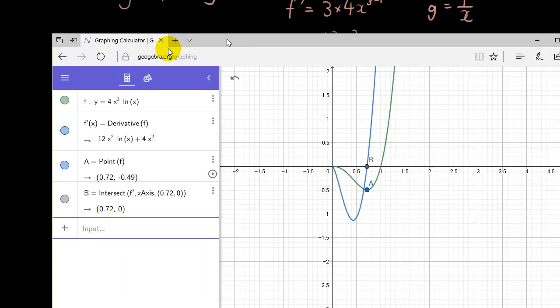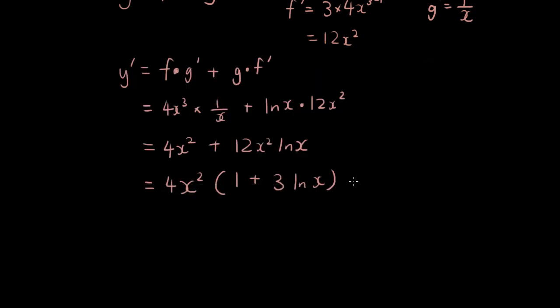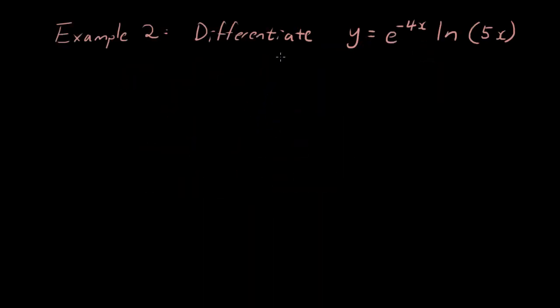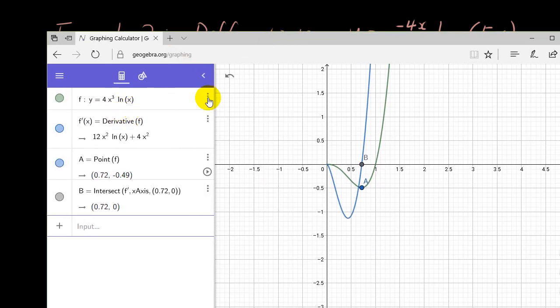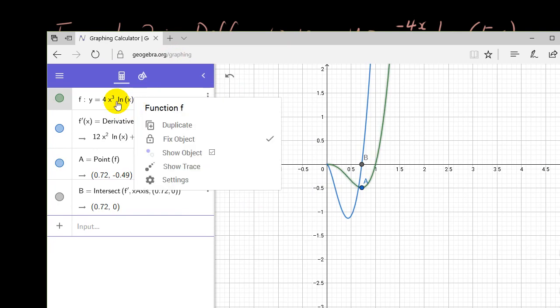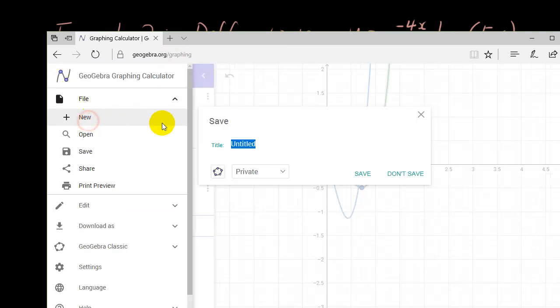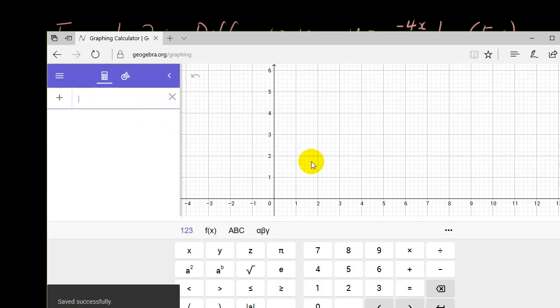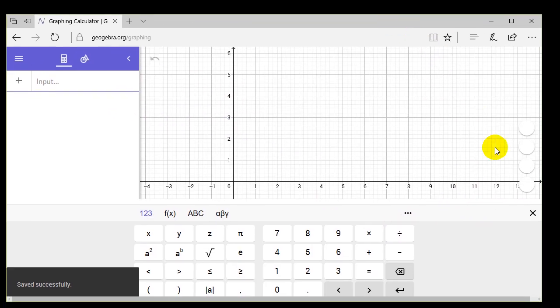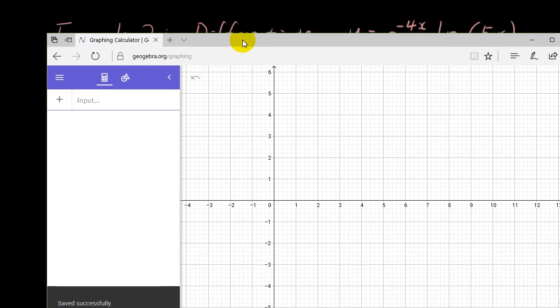Let's try and do another question. We want to differentiate y equals e to the power of minus 4 x times ln bracket 5 x. So I want you guys to have a go and come back for the solution when you are done. So as always, let's try and get the solution in GeoGebra first, so we know that we are doing things correctly. Let's just go to a new one. And let's get rid of the calculator thing on the bottom.